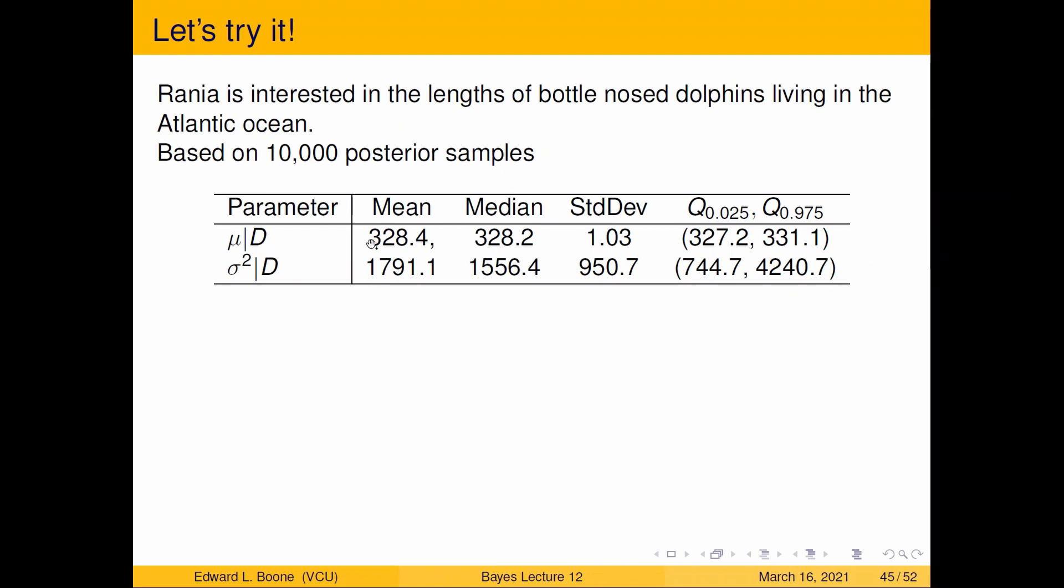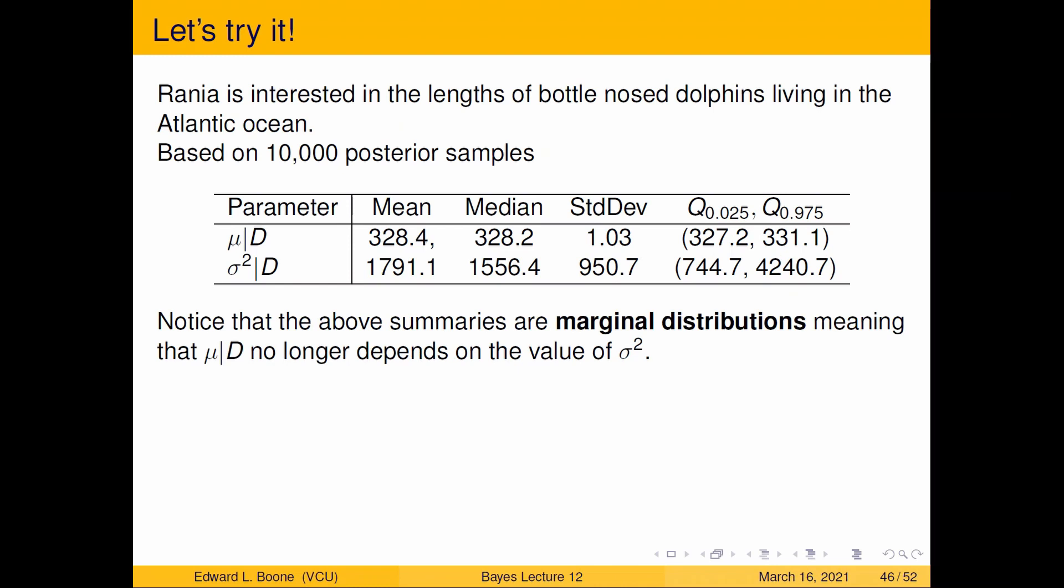And I can come up with this table here. So these are my quantiles over here. I get a credible interval, standard deviation, a median, a mean, and I get it for both parameters. But if you noticed here, my mean mu given D does not depend on sigma squared. So it's a marginal summary. And that's from a marginal distribution. So mu given D no longer depends on the value of sigma squared.